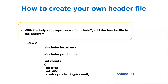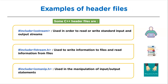Now let's have a look at some examples of header files. #include iostream — iostream is the header file that is used to read and write the standard input/output streams. Because of this header file we can take the input and display the output. Note that iostream.h is not used because after standardization of C++, iostream became a standard header whose functions are now in the std namespace.